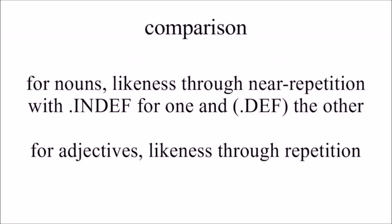For nouns, likeness is expressed through near repetition of the noun, using an indefinite marker for one of the two instances for the noun. And the other doesn't have an indefinite marker, which makes it definite by default. Yes, I know, definiteness is the default one.